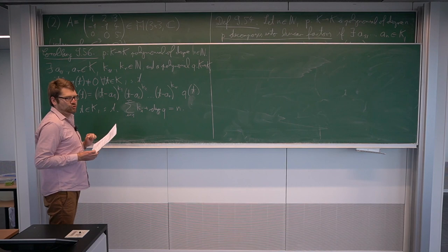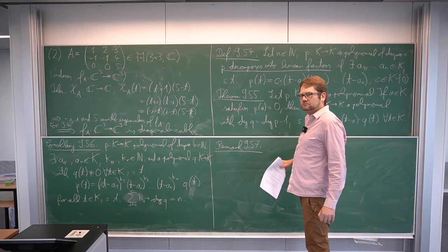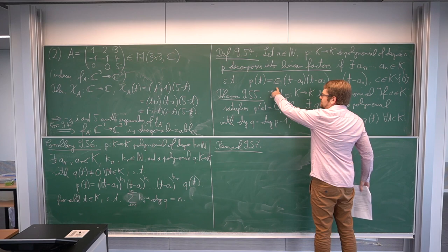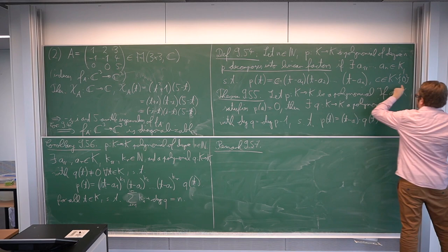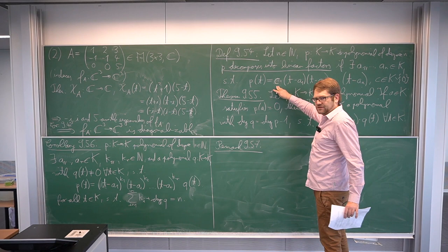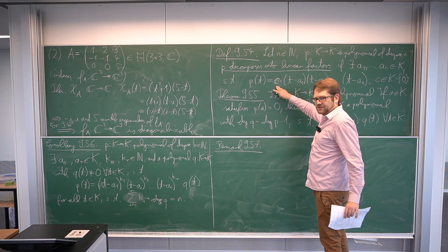This is the general factorization theorem for polynomials — the general way you can write a polynomial. One small remark: in the definition of decomposing into linear factors, not only can there be a sign, there can also be a constant factor times this product. The constant just needs to be non-zero. Otherwise we have linear factors, but we can multiply by any non-zero constant.